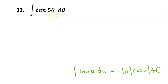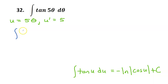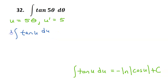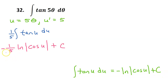Let's jump in and do our u substitution. We will let u equal 5 theta, which means that u prime is going to equal 5. So when we do the u substitution, we're going to get tangent u, and instead of d theta we will put du over u prime, which is 5. I can just take the 5 from the denominator and write it out in the front as a 1 fifth. So we get negative 1 fifth natural log absolute value of cosine u plus c.